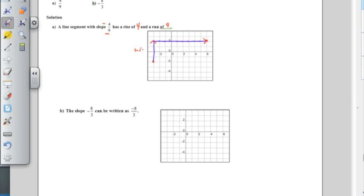This is my rise. This is my run. So now to draw that line segment, I'm just going to connect those two points. And that is an example of a line with a slope of four ninths. There are lots of lines that have slopes of four ninths. It all depends where you put your first point.